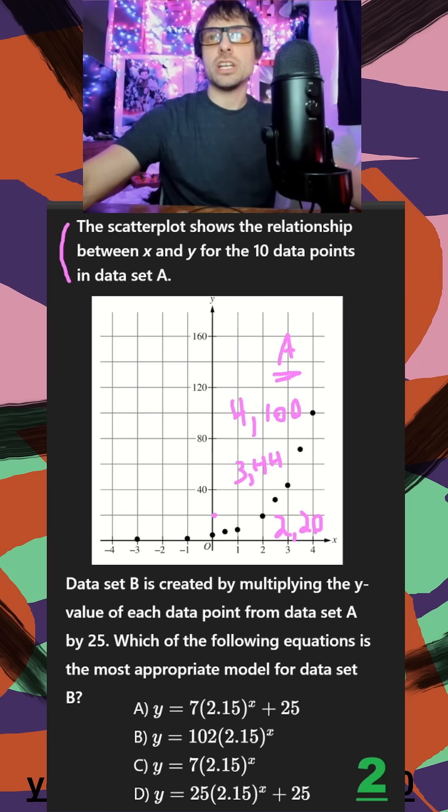We'll jump back and see what change they want us to make. They say to multiply each y value from data set A by 25.